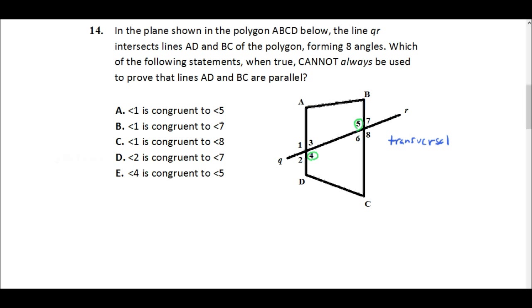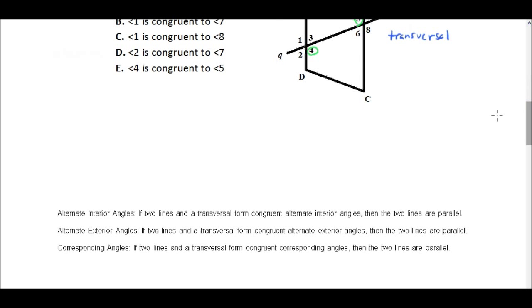So I've already circled angles four and five. So it says angle four is congruent to angle five. Which of the following statements cannot be used to prove these two lines parallel? Well, angles four and five could be used to prove AD and BC parallel, because they are part of a theorem, which I'm going to pull up down here, called alternate interior angles.